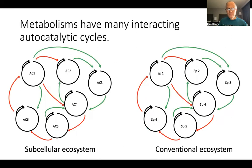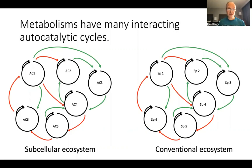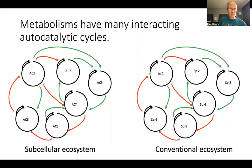What we see is that subcellular ecosystems — metabolisms — are equivalent in some broad sense to conventional biological ecosystems. There are many autocatalytic cycles at many hierarchical levels that interact with one another in diverse ways. Those cycles form a sort of unit of memory, because once they spin up, they tend to persist. They are the basis of heritability and persistability of ecosystems.